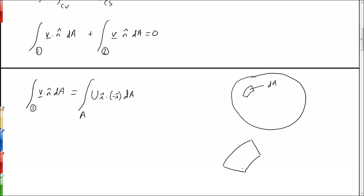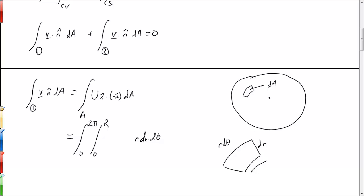When we integrate over the circular area, the differential element dA expands to dr in the radial direction and r dθ in the circumferential direction — not just dθ, because as we move farther from the centerline this distance grows proportional to r. So this integral over the area is actually a double integral from 0 to 2π in θ and from 0 to R in r, making dA equal to r dr dθ.